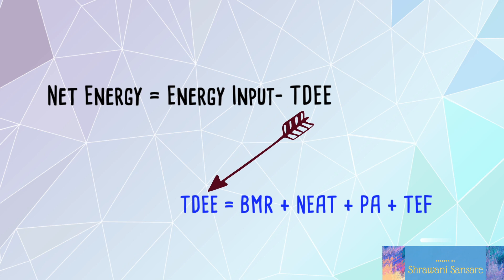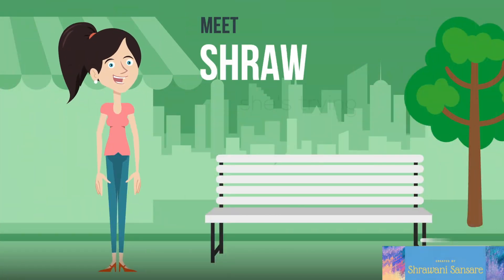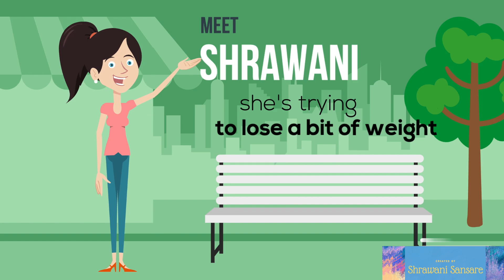Now that we've covered all the components of this equation, I'm going to show you how to apply it to achieve your goals by manipulating two variables: energy input and physical activity. I'm going to walk through some very simple math problems — nothing intimidating. If you learn better by writing, feel free to pause right now, grab a notebook and a pen, and do this with me. So meet me — I'm trying to lose a little bit of weight.